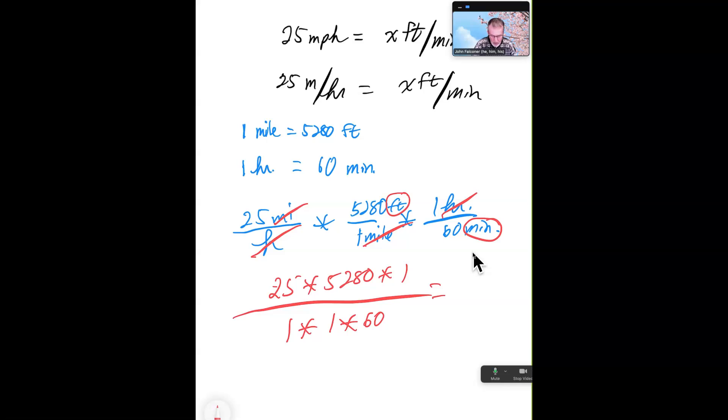And we're going to use the fraction key. That's the one that says numerator, denominator, N over D. Just push that. And then I would use parentheses, left parenthesis, then a 25, multiplication.